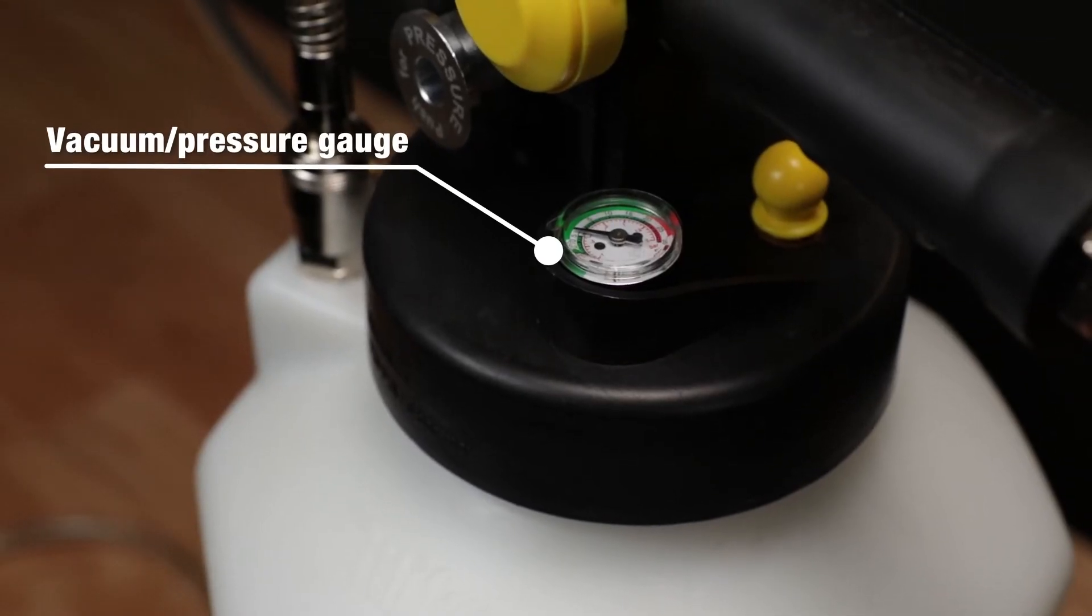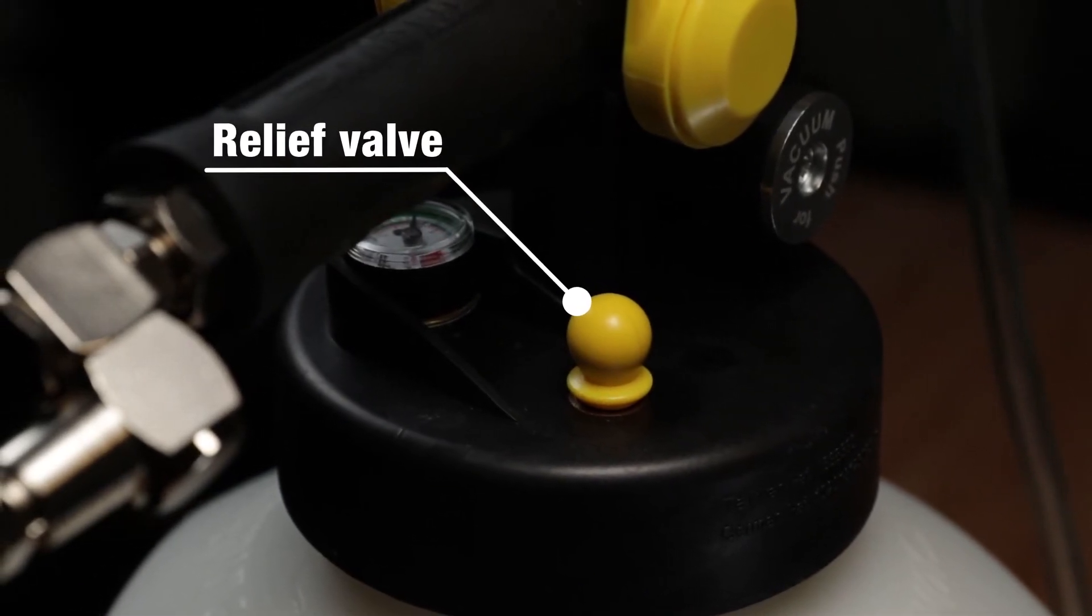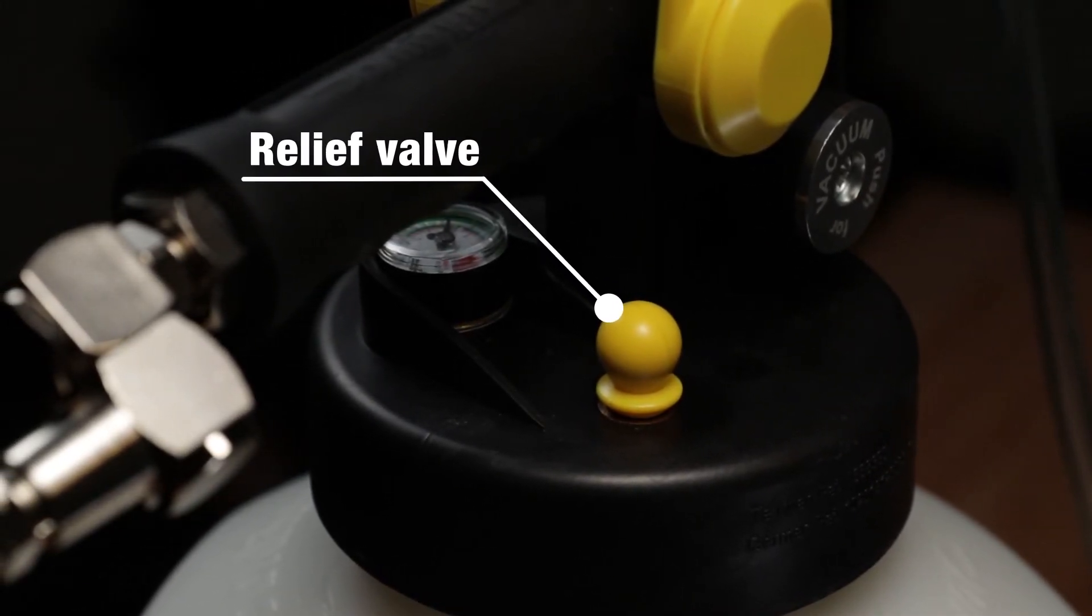Included on the top is a combination pressure and vacuum gauge and safety pressure relief valve to regulate reservoir pressure and vacuum and prevent overpressure situations.